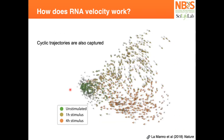This also works for cyclic trajectories. Since you're not fitting any model — just setting for each cell where its next cell stage should be — you can see a clearly cyclic trajectory. Here you have cell culture from different time points to capture different cell stages, and you can see their cyclic movement in this area.